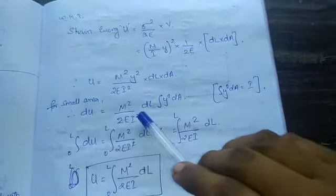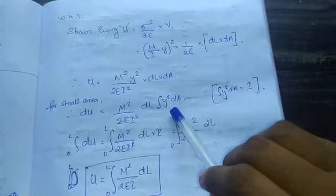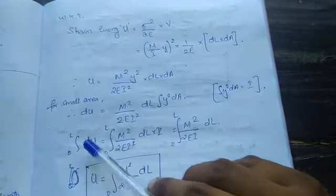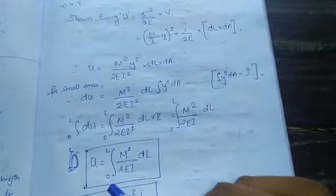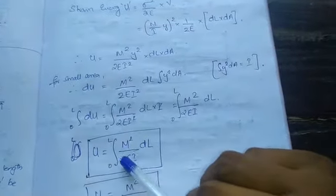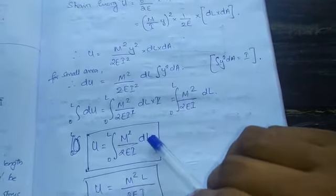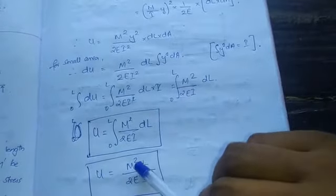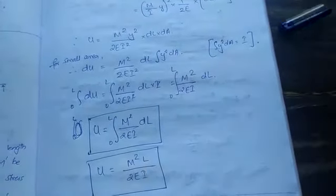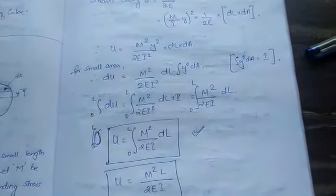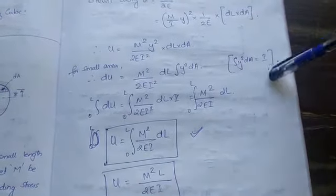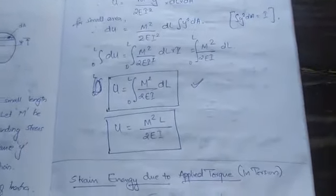For small area, you will integrate this one from 0 to L. So U is integral 0 to L M square by 2EI DL or you can write U equals M square L by 2EI. Better study this formula that will be useful for your operations.